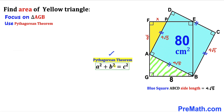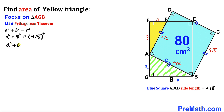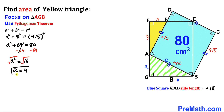Using the Pythagorean theorem A² + B² = C², where C is the hypotenuse: A² + 8² = (4√5)². Simplifying: A² + 64 = 80. Subtracting 64 from both sides: A² = 16. Taking the square root, A = 4. Therefore AG = 4 units.